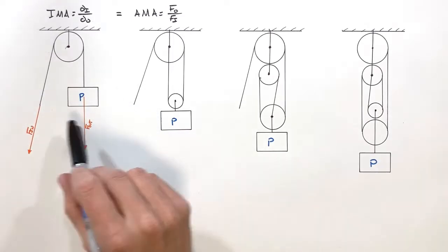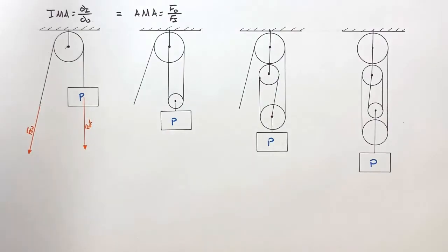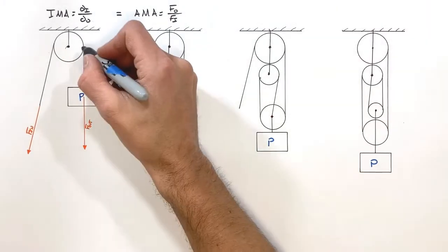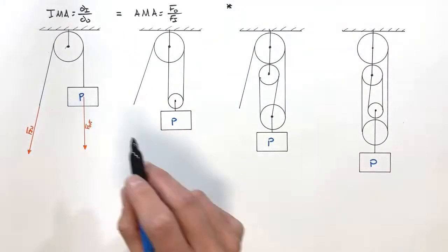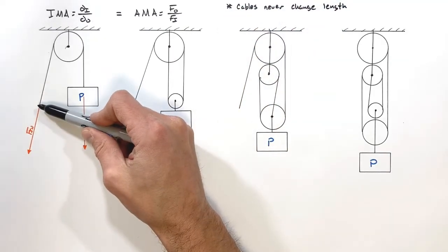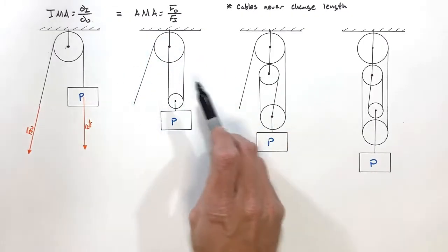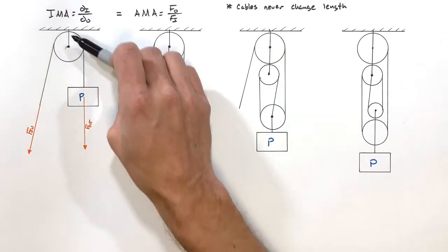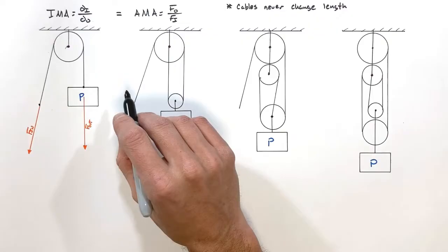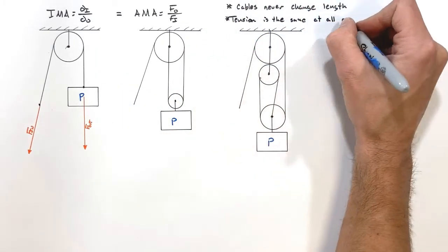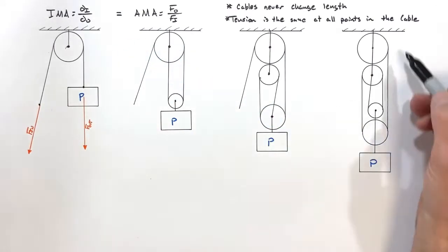Looking at this pulley, we can work our way through the displacements using two key principles. First, strings or cables never elongate — if I pull one foot of cable downward on one side of the pulley, the other side must move one foot as well. Second, the tension is the same at all points in the cable — so if there's 100 pounds of tension at one point, there's 100 pounds of tension everywhere in that cable.